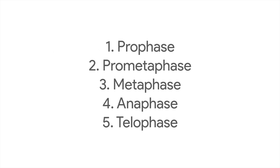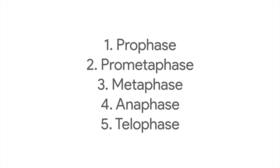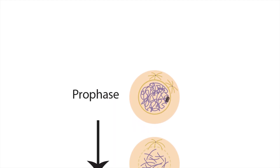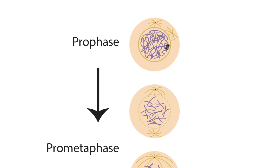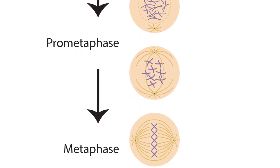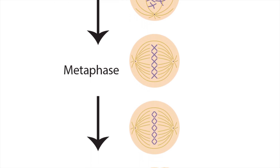Mitosis might be defined as having four, five, or even six stages. It really doesn't matter if you work with a four-stage, five-stage, or six-stage model as long as you grasp the general process. For now we're going to look at these key stages: prophase, prometaphase, metaphase, anaphase, and telophase.